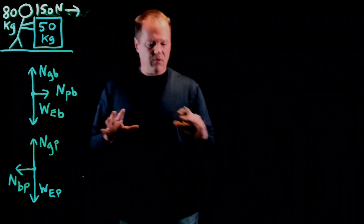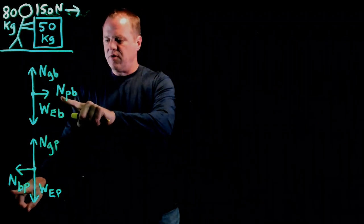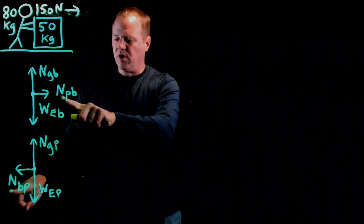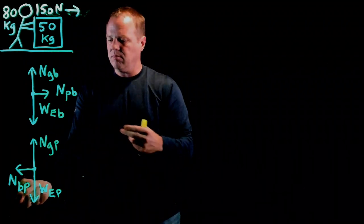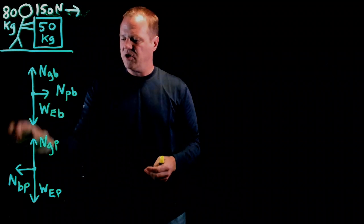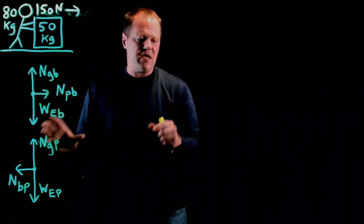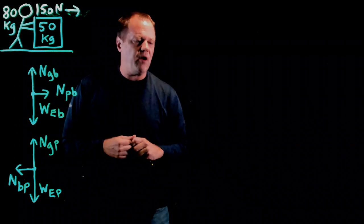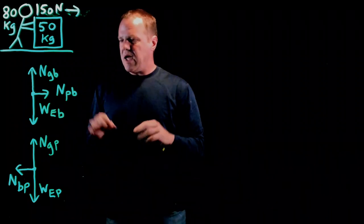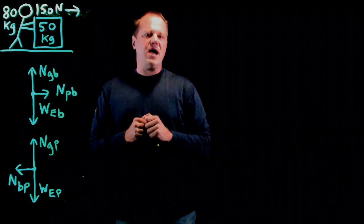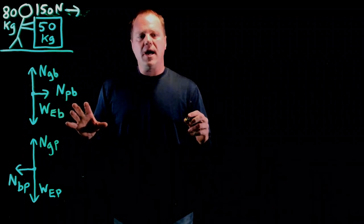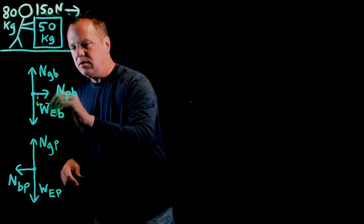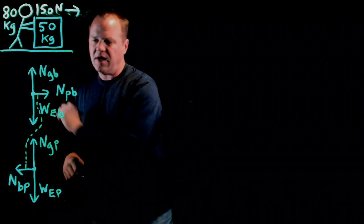So, there's several important characteristics here. They are the same type. They're both normal forces. We have switched the subscripts around. Person on block, block on person. And I've reversed the direction. And I've drawn the vectors about the same length to show that they're about the same strength. Okay, and another thing we can do is connect them with a dotted line in order to show that they are an action-reaction pair. So, you might include something like that in your diagram.